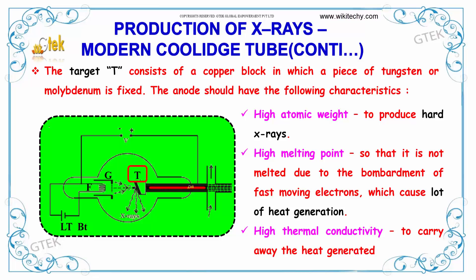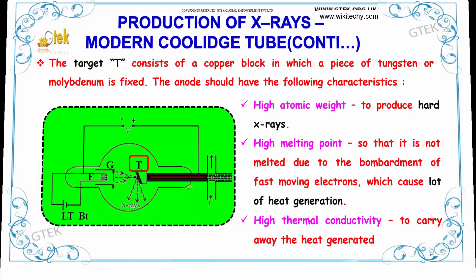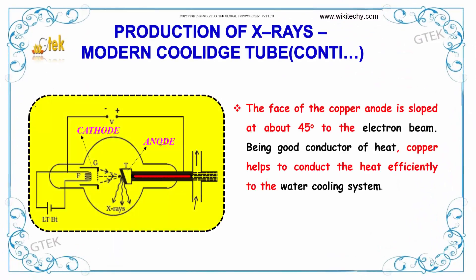This is the target T. The face of the copper anode is sloped at about 45 degrees to the electron beam. Being a good conductor of heat, copper helps to conduct heat efficiently to the water cooling system.